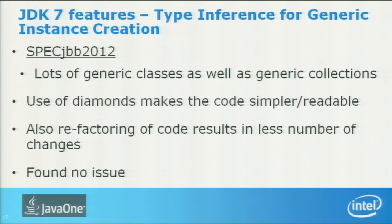We also used type inference for generic instance creation. We have many generics and generic collections, and the diamond operator makes the code very simple and readable. It was very useful and made code refactoring much easier. No scaling issues were found with type inference for generics.